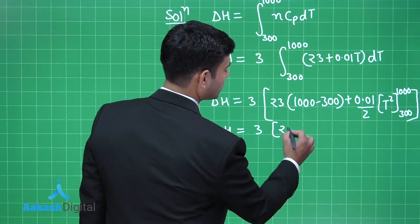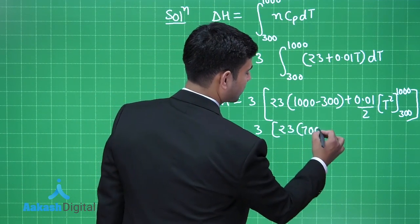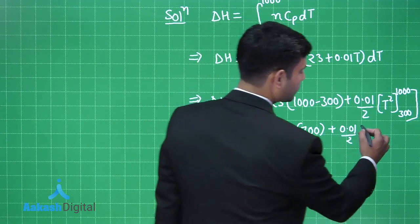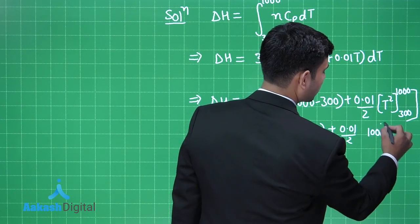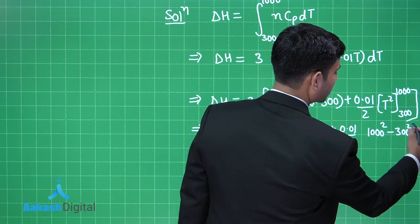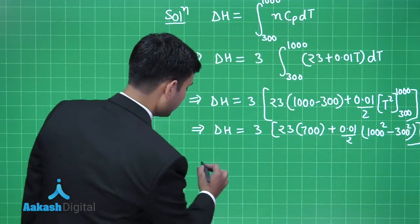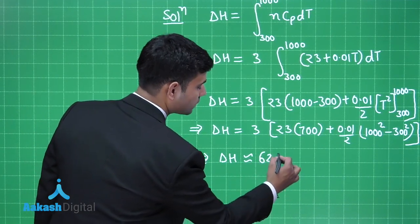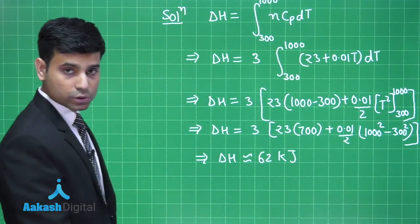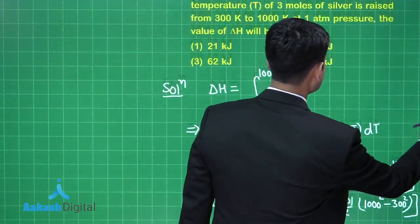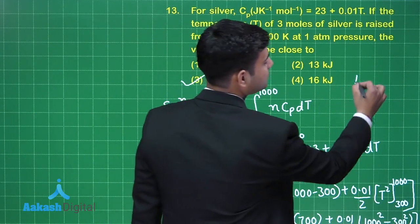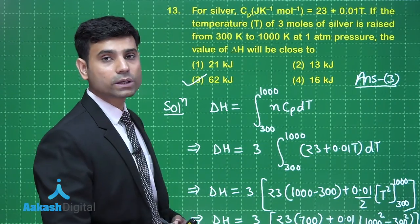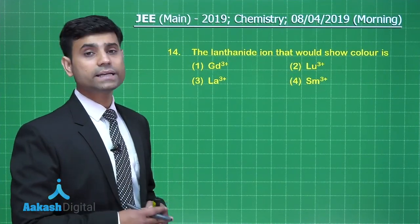The full expression becomes ΔH = 3 × [23 × 700 + 0.01/2 × (1000² − 300²)]. Solving this gives ΔH ≈ 62 kJ. The correct answer is option 3.